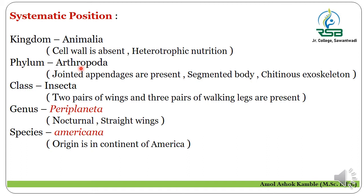The phylum is Arthropoda. Arthropods show jointed appendages, that is jointed legs. The body has segments and is covered by an exoskeleton made up of chitin, giving the cockroach a characteristic shining appearance. The class is Insecta, because it has two pairs of wings and three pairs of walking legs.